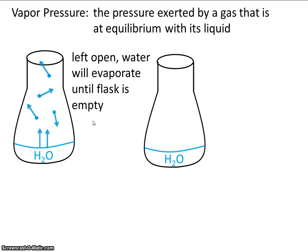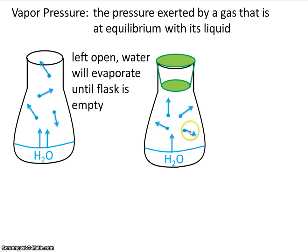Conversely, if we have the same flask with water in it but we have a stopper on it, the water will evaporate, but it won't evaporate until the flask is empty. Some of these water molecules will return back to the liquid. So what we have is some of the liquid escaping into the gas phase, and some of the gas returning to the liquid phase. When that's occurring at equal rates, that's equilibrium.